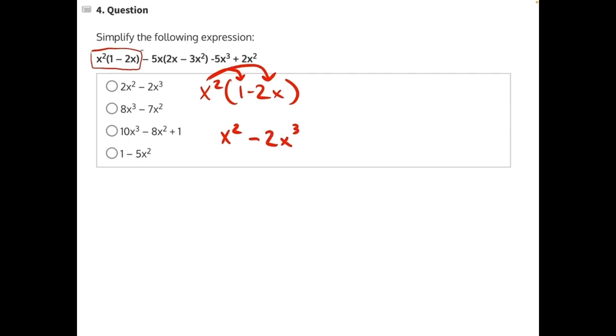Then we can move on to the next set of terms, negative 5x times 2x minus 3x squared. Once again, we're going to have to distribute.